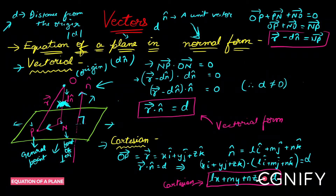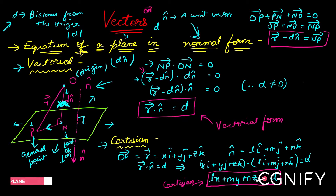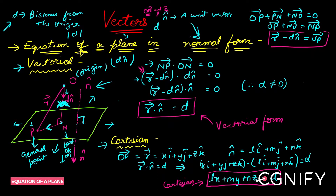Since NP equals r̄ minus d·n̂ and NP dot ON equals zero, substituting gives (r̄ minus d·n̂) · n̂ = 0. Simply expand: r̄ · n̂ minus d·(n̂ · n̂) = 0. Since n̂ is a unit vector, n̂ · n̂ = 1, so we get r̄ · n̂ = d. This is the final result in vectorial form.